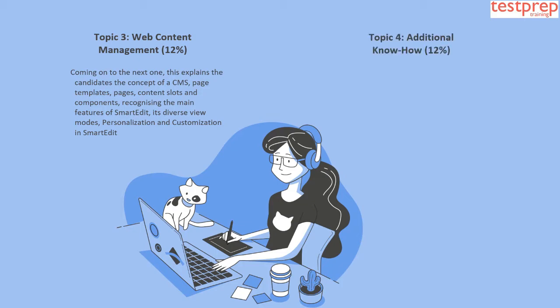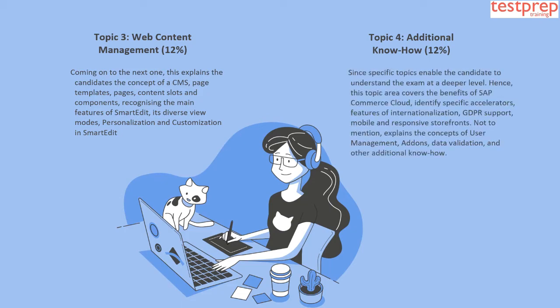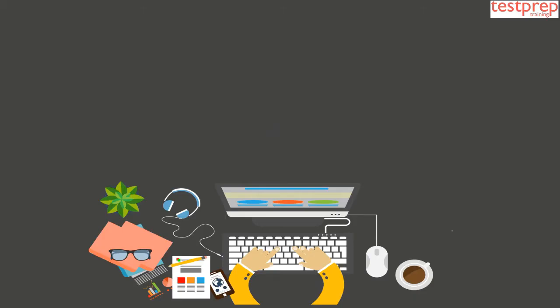Topic 4: Additional Know-How, which comprises 12% weightage in the exam. These specific topics enable the candidate to understand the exam at a deeper level. This topic area covers the benefits of SAP E-Commerce Cloud, specific accelerator features, internationalization, GDPR support, mobile and responsive storefronts, user management, add-ons, data validation, and other additional know-how.